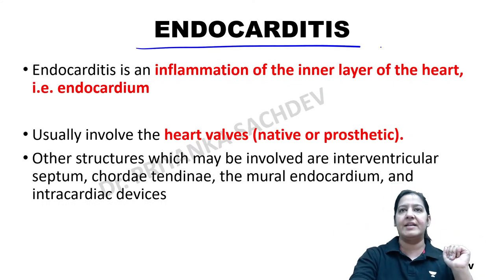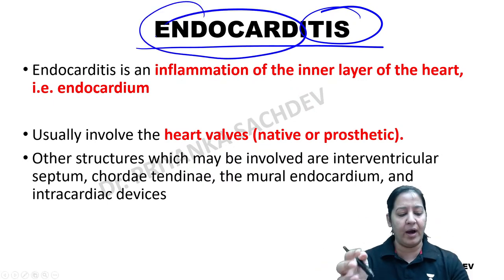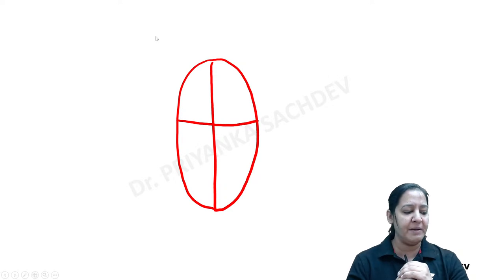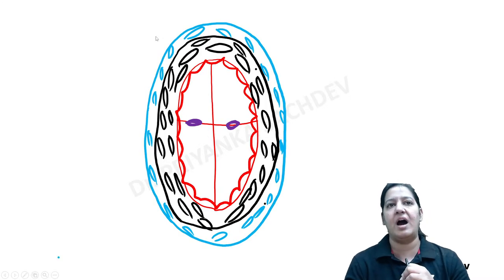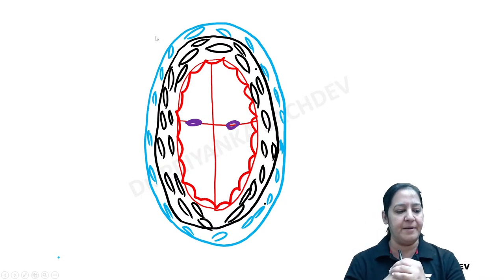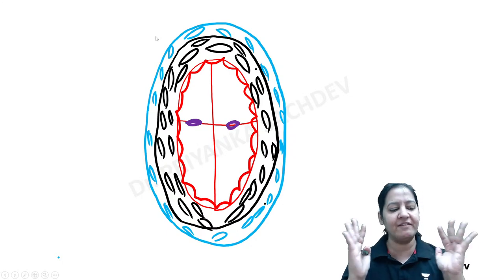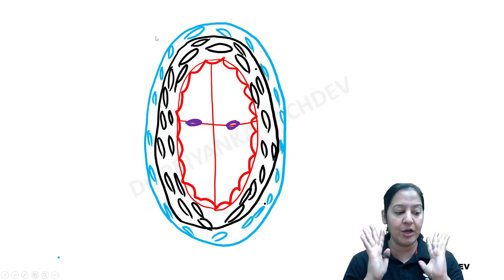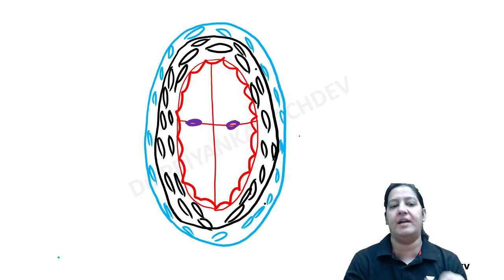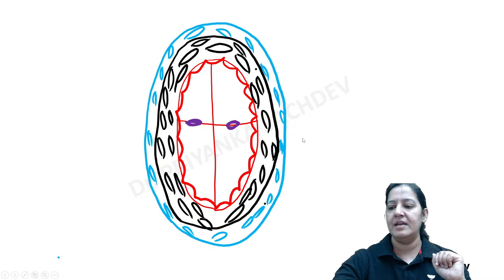Endocarditis means inflammation of the inner layer. The heart is made up of three layers: endocardium — the innermost red layer, myocardium — the middle black layer, and pericardium — the outermost blue layer. Endocarditis is inflammation of the inner layer, the endocardium.